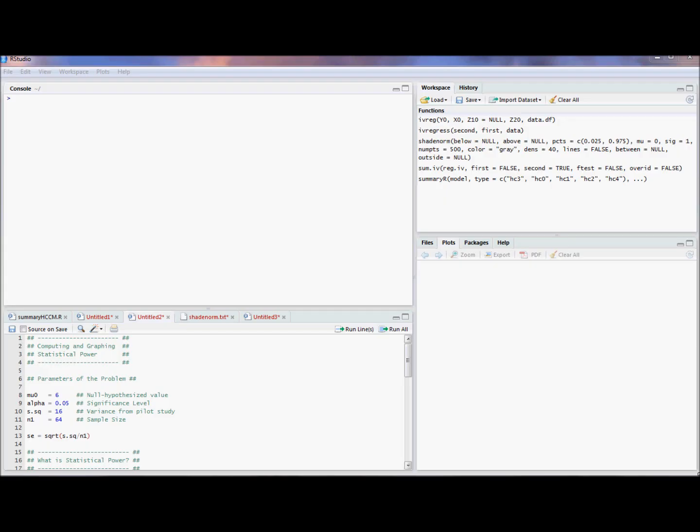In this video I'm going to show an example of how to compute power using R. We're going to test a hypothesis that the mean is 6 at the 5% level. We did some pilot study and we found that the sample variance of that pilot study was 16.